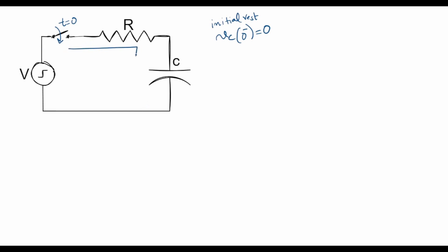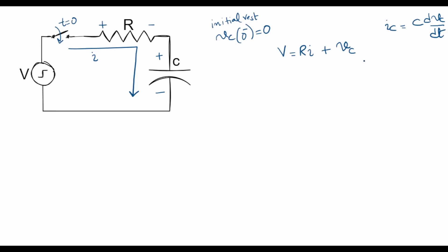So at t equal to 0, a current I starts to flow through the circuit, and I can write a KVL equation in this circuit which would be: V is equal to R times I plus VC, where the drop across the resistor is R times I and the drop across the capacitor is VC.